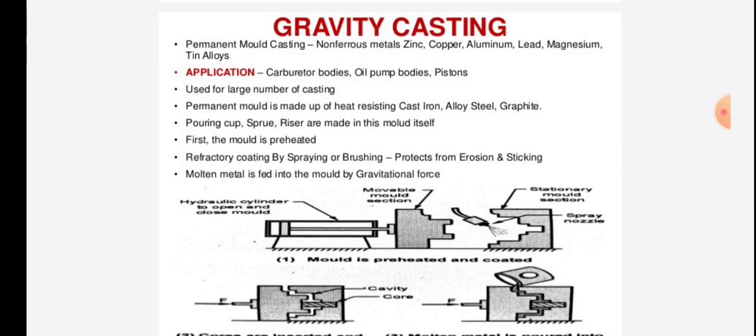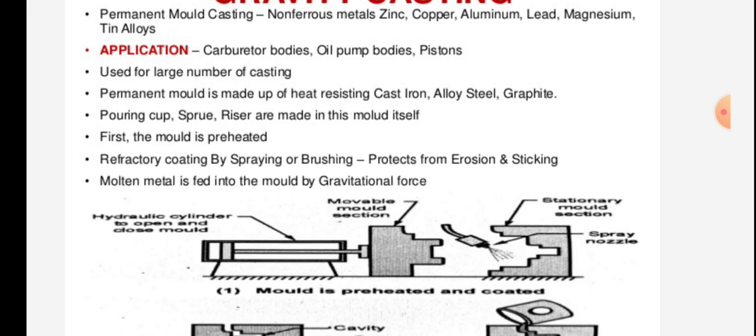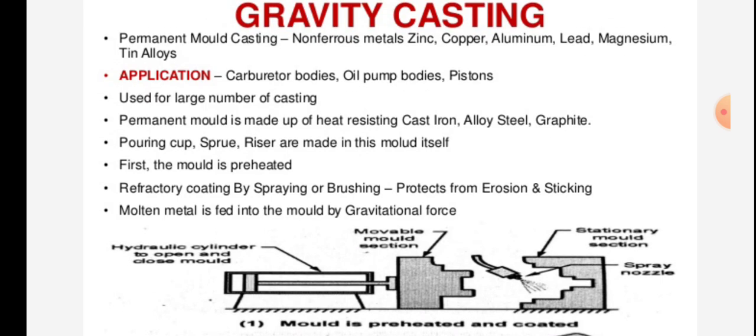Permanent mold casting uses non-ferrous metals such as zinc, copper, aluminum, lead, magnesium, and tin alloys. Applications include carburetors, bodies, oil pump bodies, and pistons. It is used for a large number of castings.